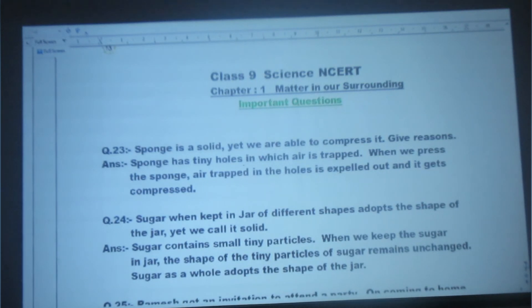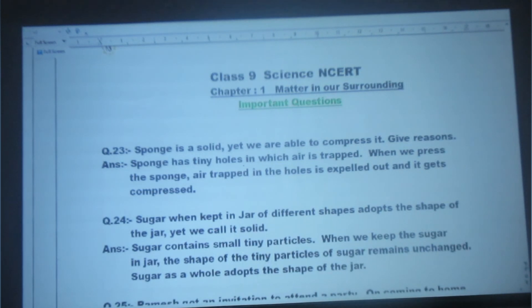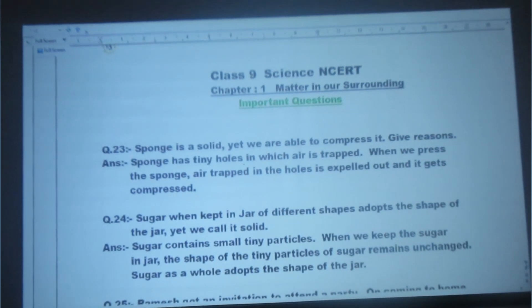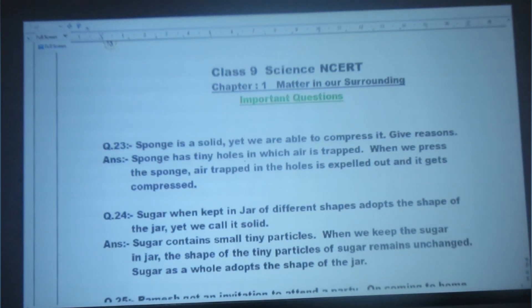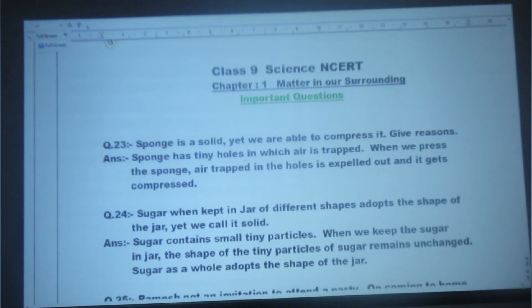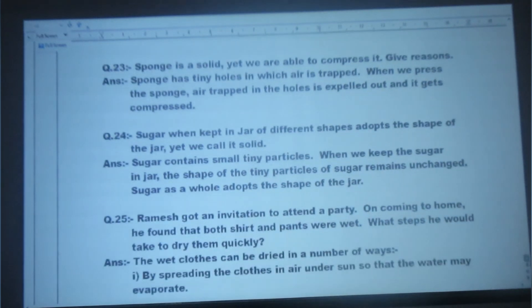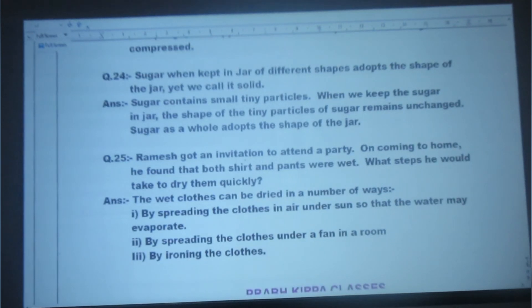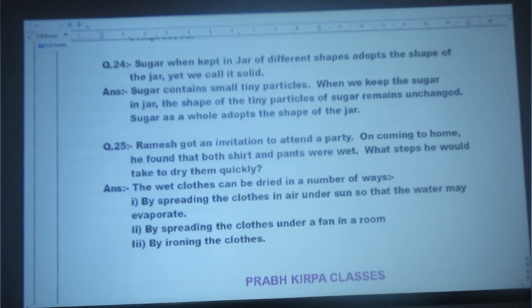Next question: Sugar when kept in jar of different shapes adopts the shape of the jar, yet we call it solid. Answer: Sugar contains small tiny particles. When we keep the sugar in jar, the shape of the tiny particles of sugar remains unchanged. Sugar as a whole adopts the shape of the jar. We generally use sugar in small particle form. When we put sugar in a container, it takes that shape, but the tiny particles of sugar don't change their shape.